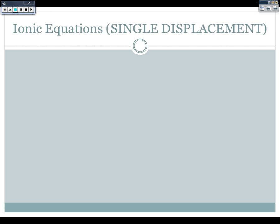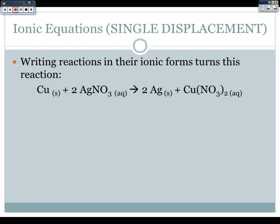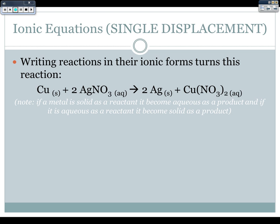Let's look at single displacement reactions. A single displacement reaction starts with one metal plus a compound, and if the reaction occurs based on the activity series, the metals switch places. The lone metal starts out as a solid and becomes aqueous as a product. The compound metal starts out as aqueous and becomes solid. So: if a metal is solid as a reactant, it becomes aqueous as a product; if it is aqueous as a reactant, it becomes solid as a product.